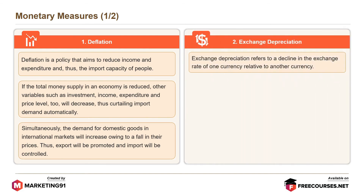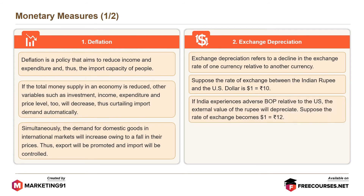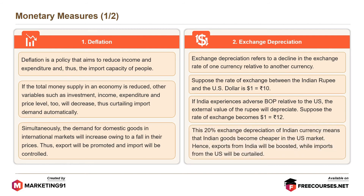Exchange depreciation refers to a decline in the exchange rate of one currency relative to another. Suppose the rate of exchange between the Indian rupee and the US dollar is 1 dollar to 10 rupees. If India experiences an adverse BOP relative to the US, the external value of the rupee will depreciate — suppose the rate becomes 1 dollar to 12 rupees. This 20% exchange depreciation makes Indian goods cheaper in the US market; hence, exports from India will be boosted while imports from the US will be curtailed.